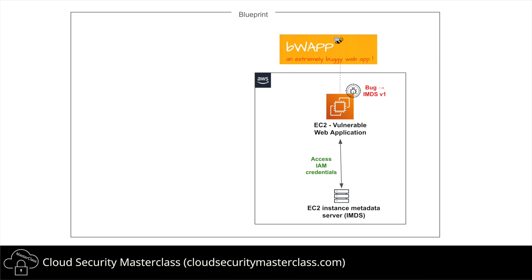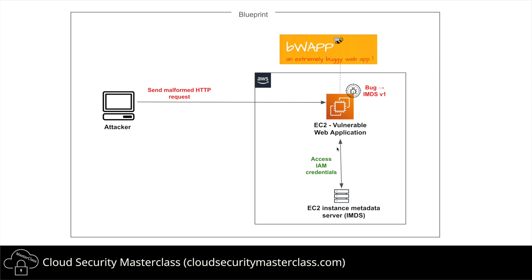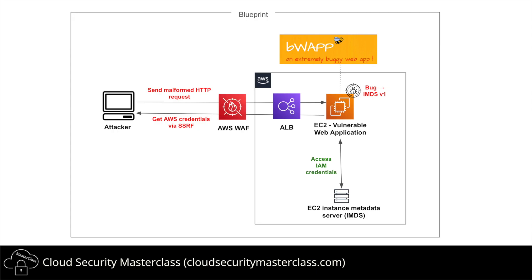V2 is much safer as it uses tokens, but V1 is vulnerable to SSRF. From the perspective of an attacker, the attacker sends an HTTP request to the web application, curated in a way that tricks the EC2 instance to reach out to the IMDS server, extract AWS credentials, and send those back as the HTTP response, thus successfully conducting the SSRF attack. For defense, we'll be deploying an application load balancer, which is a prerequisite for WAF to work, and then creating a web ACL rule to detect the malformed HTTP request and block it.